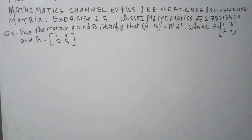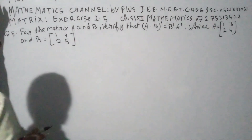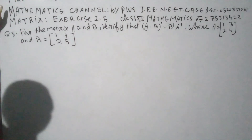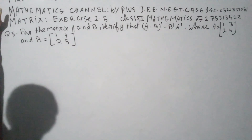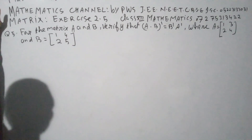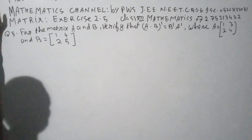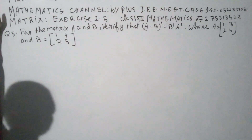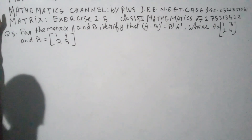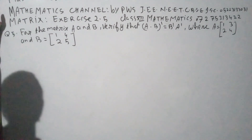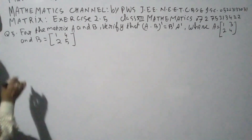Question number 5. What are matrix A and B? We need to find that (AB) transpose is equal to B transpose A transpose. Matrix A is equal to 1, 3, 2, 4. Matrix B is equal to 1, 4, 2, 5.